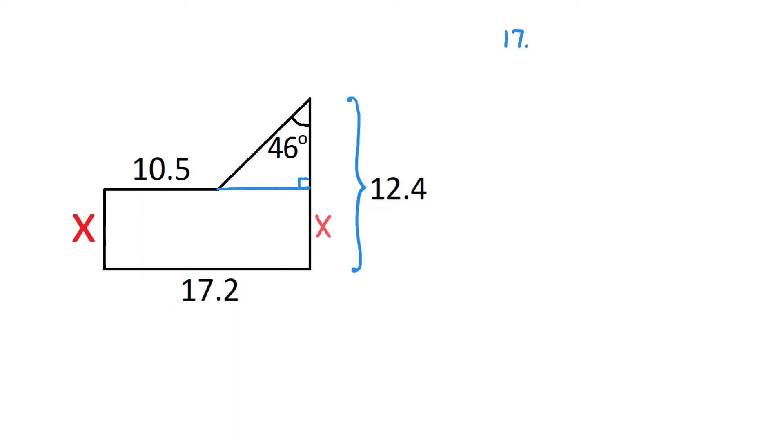17.2 minus 10.5 equals 6.7. So, we just found that the bottom side of this triangle is 6.7. And this is the side that is opposite of the acute angle of 46 degrees.